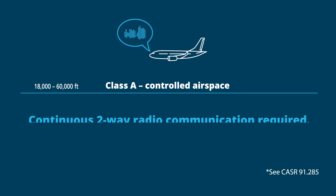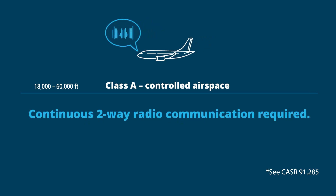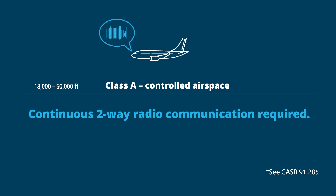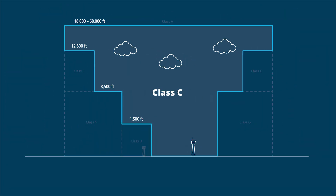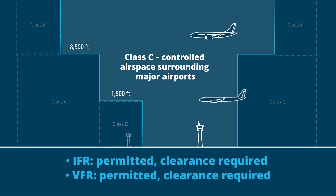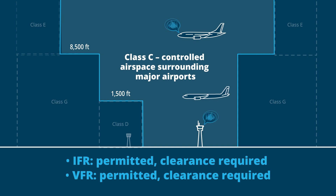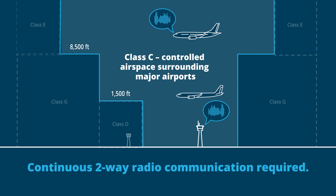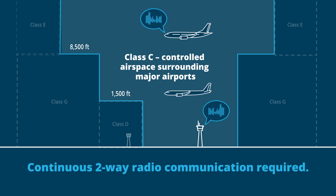Continuous two-way radio communication is required in Class A. Class C surrounds major airports. IFR and VFR flights are permitted and require clearance, and continuous two-way radio communication is required.